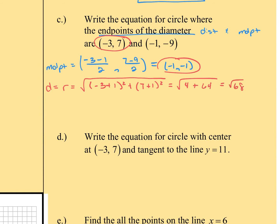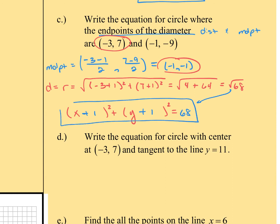So we can jump into our equation for our circle. I'll set up our standard format — it's always going to look like that. We drop in our center, which is going to become a plus 1 and plus 1, because remember it's minus the x-coordinate and minus the y-coordinate, so they're both going to become plus 1's. And then when we drop in the radius, we square it, so we write it as a nice 68.